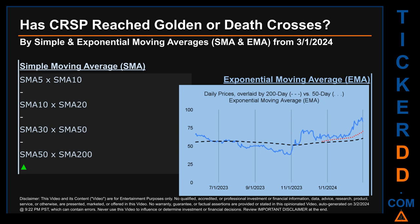Continuing with SMA, we looked across the 5 to 10, the 10 to 20, and the 30 to 50-day ranges to see if golden and death crosses had been reached. We could not find either a golden cross or death cross signal for the 5 to 10, the 10 to 20, or the 30 to 50.